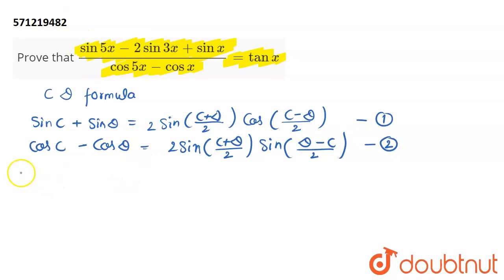If I am going to simplify, I can write LHS as sin 5x plus sin x minus 2 sin 3x. In the denominator I have cos 5x minus cos x.